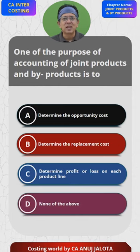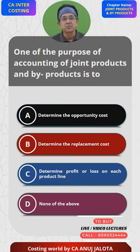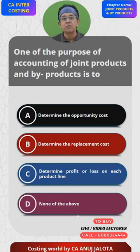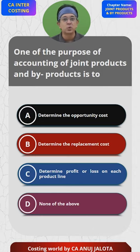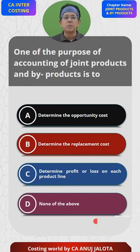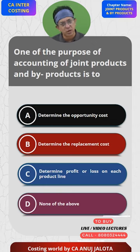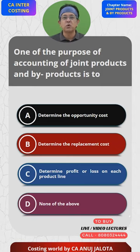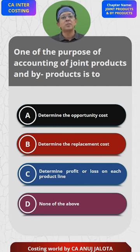As per me, the correct answer is none of them, to be very honest, because the only reason why you apportion joint cost is to value your closing stock of your products if any. Rest, there is no other purpose. There are some very small objectives, and that could be to find out profit and loss on each product also, but that is a very small objective. As such, you try to apportion your cost among the different products.